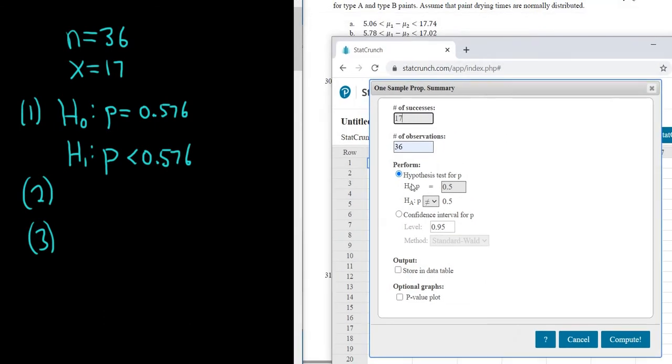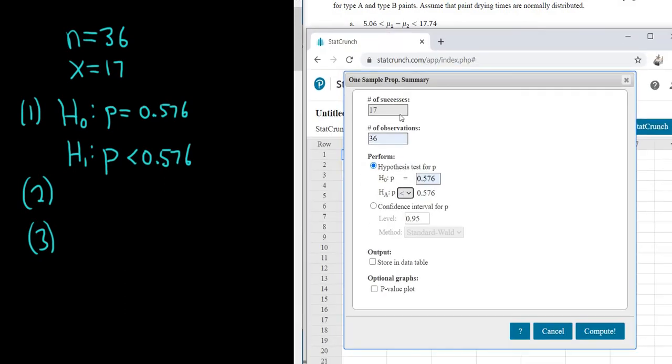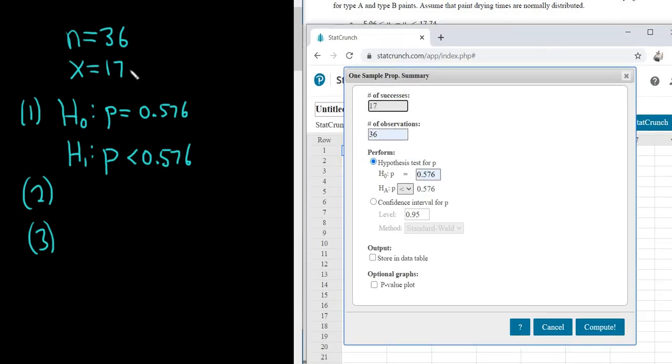And then P here is 0.576. Wow. Very strange. And then this is less than there. Okay, and then everything looks good. That's really weird because I did not do this problem. So it's strange that it auto-completed. So 17, 36. P is 0.576. We have that there. Everything looks good. I'm going to click Compute.